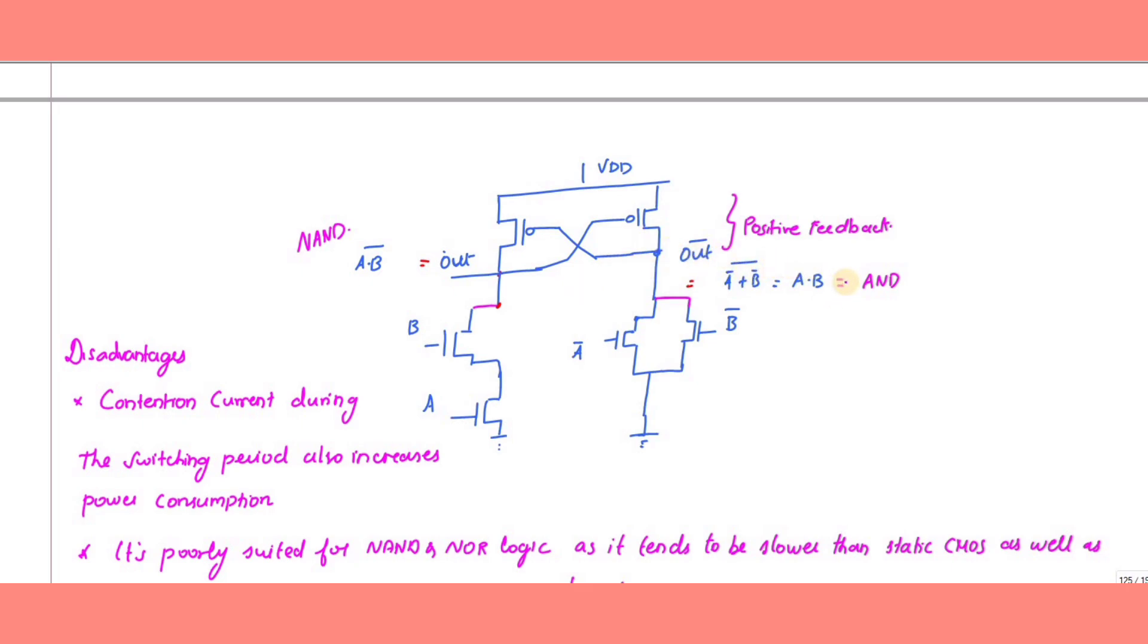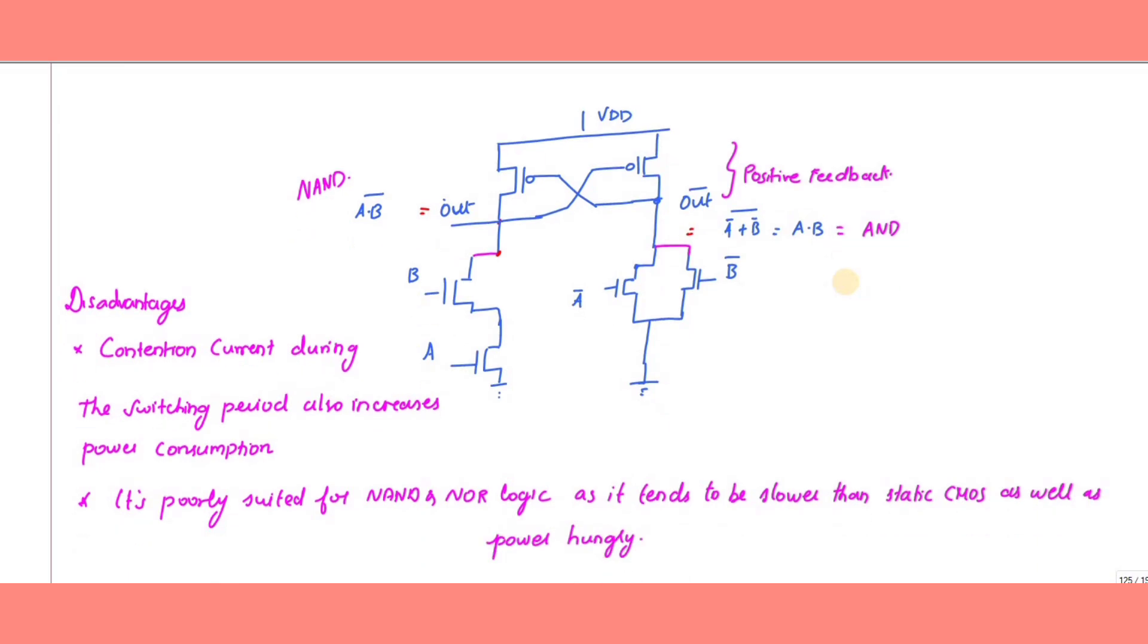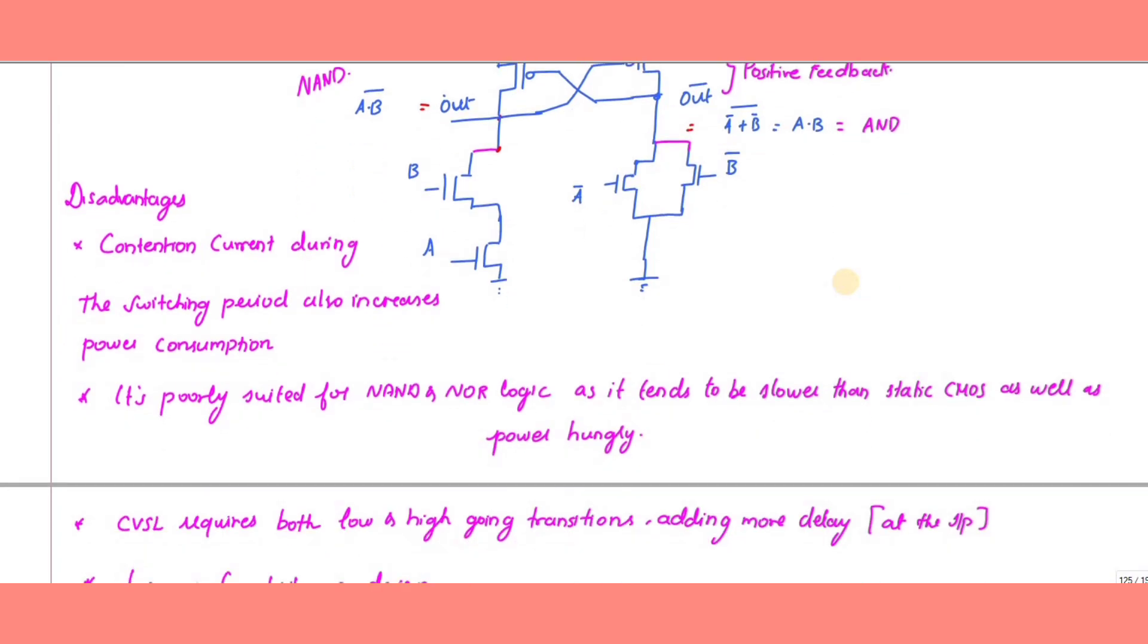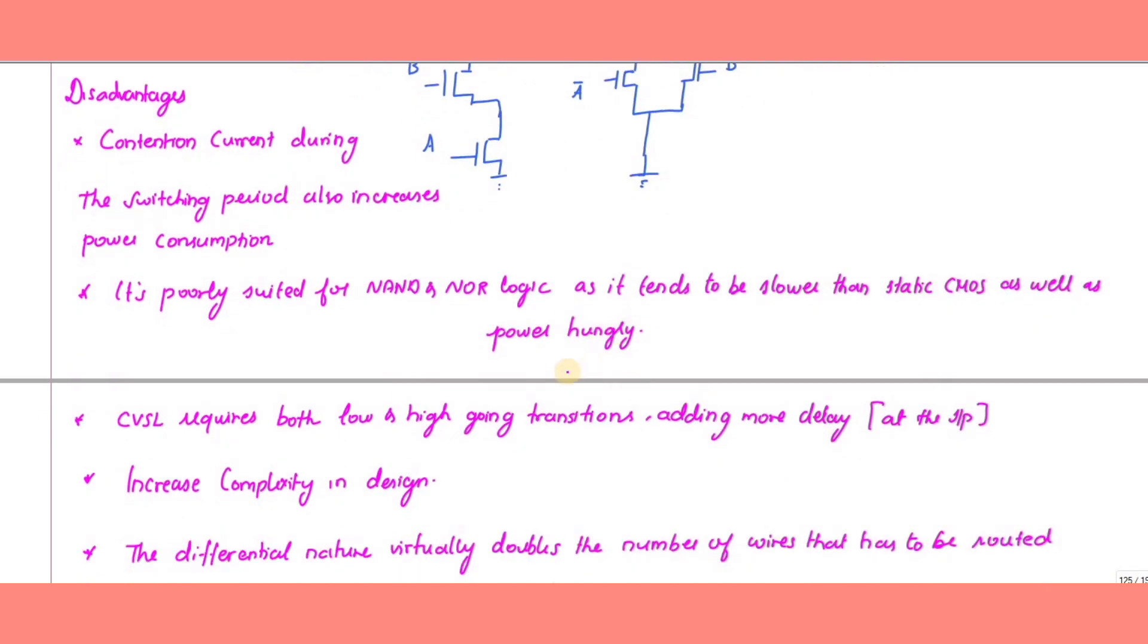The disadvantages of DCVSL include contention current during the switching period. Since pseudo nMOS logic is used, contention current is present during switching, which increases power consumption. It is poorly suited for NAND and NOR logic, tends to be slower than static CMOS, and is very power hungry.